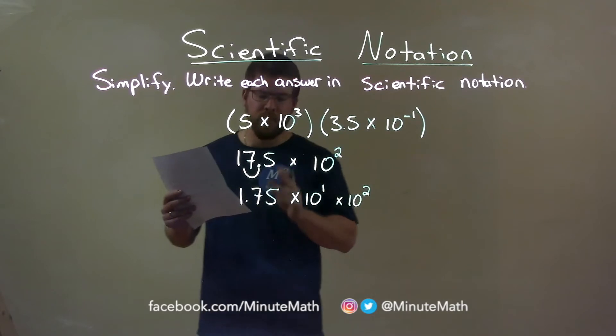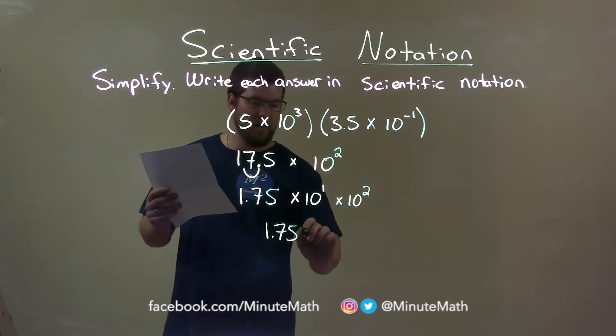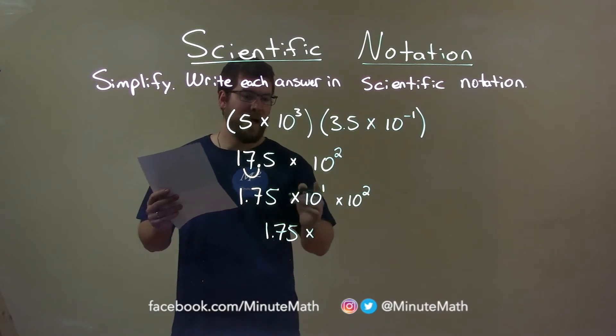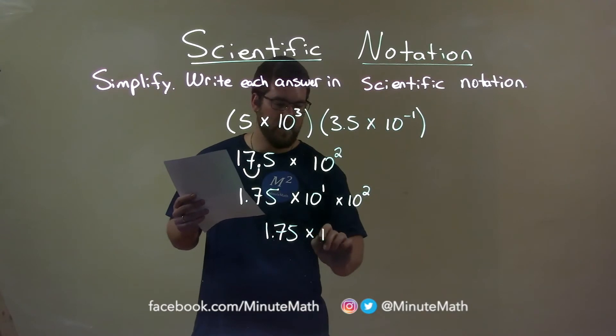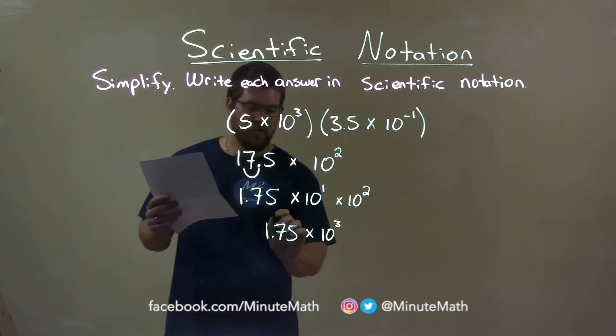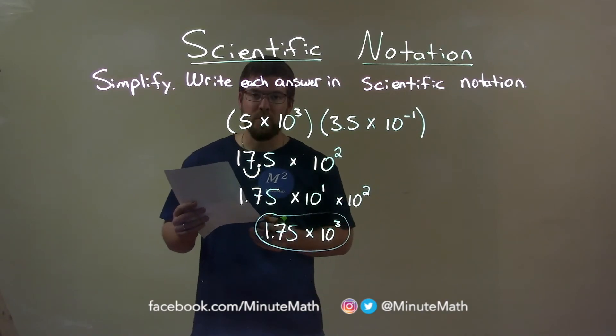And we still need to simplify. 1.75 stays where it is, multiplying it by, and again, we add the exponents when the base is the same, when they're multiplied. 1 plus 2 is 3. 10 to the third, and so our final answer is 1.75 times 10 to the third power.